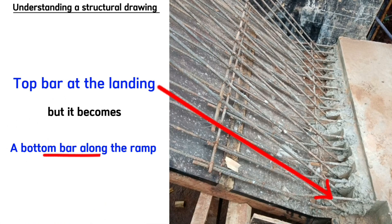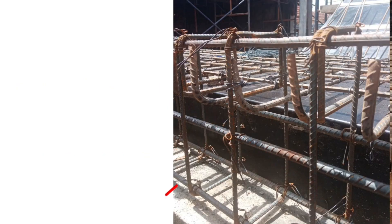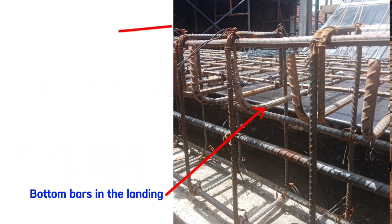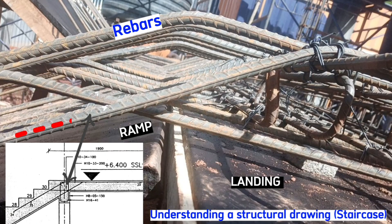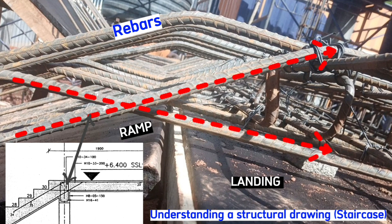For example, these steel bars here are bottom bars along the ramp but become top bars in the next landing. Similarly, these are bottom bars here in the landing but become top bars along the ramp. That means that the top bars on this landing will come like this and become bottom bars. Bottom bars become top bars in the next landing, whereas top bars along the ramp become bottom bars in the landing.